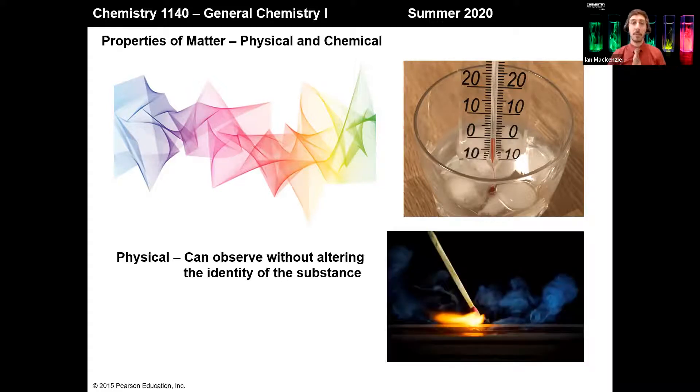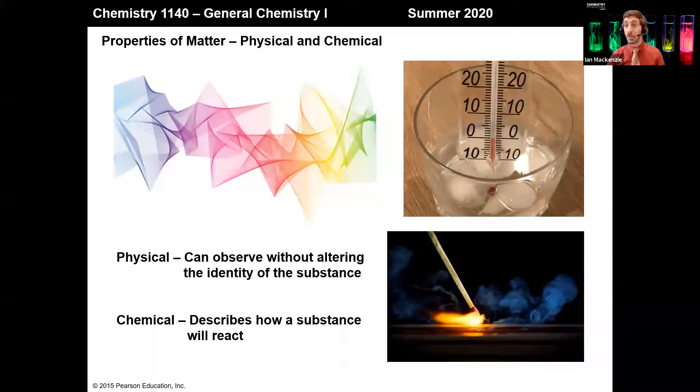However, there are some properties that when we measure them, change the identity of the matter itself. An example here is a match burning. These would be referred to as chemical properties. These define how a substance will react, and when we measure them, it destroys or changes or alters the substance itself in its fundamental identity. If we take a match, we can look at it and talk about its color as a physical property without changing it at all. But if I measure its flammability, when I do so, it burns the match, which converts wood and some phosphorus into primarily CO2 and water from reaction with oxygen in the air, and this changes the fundamental identity. The match is no longer a match once you've measured its flammability.